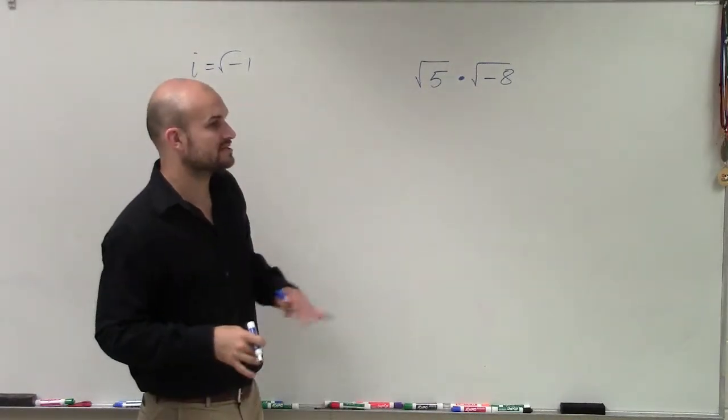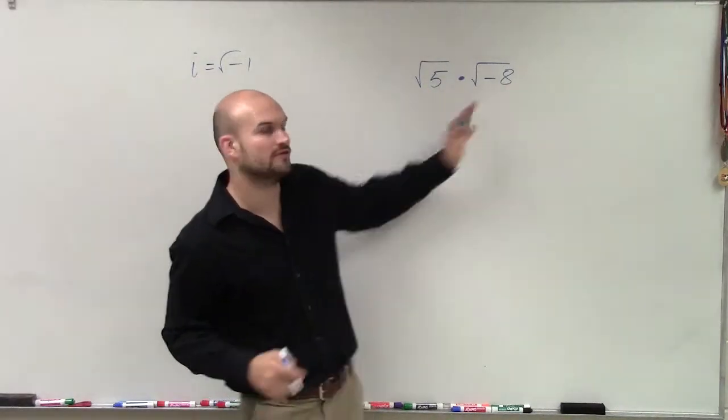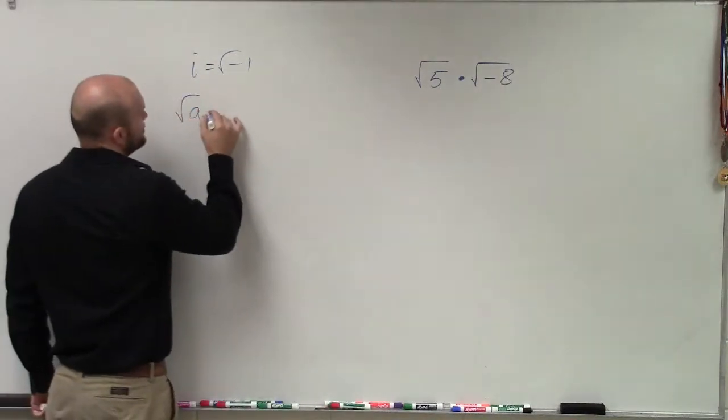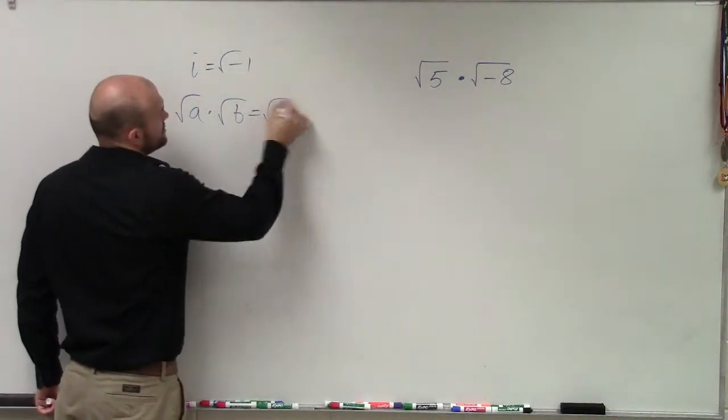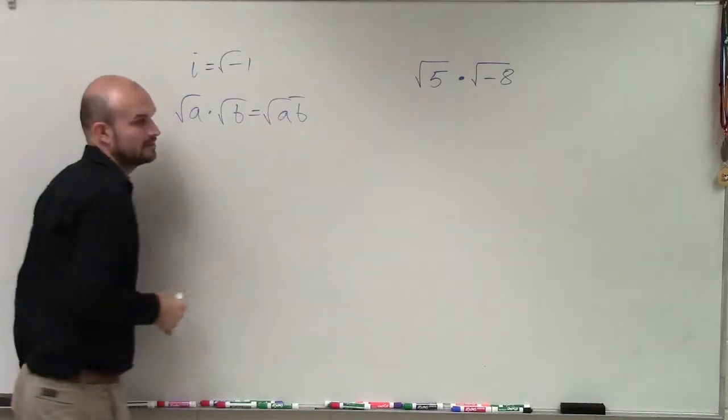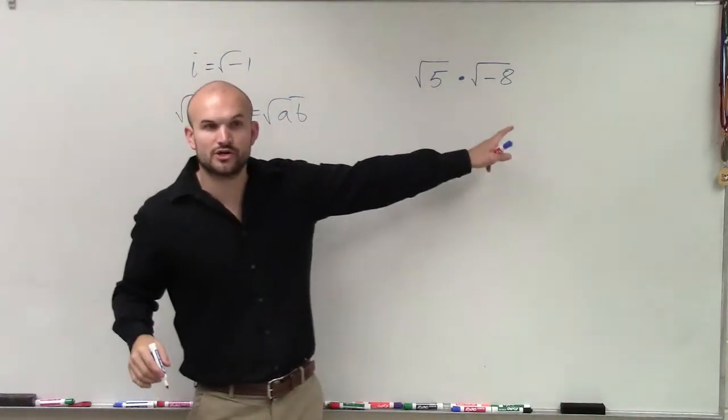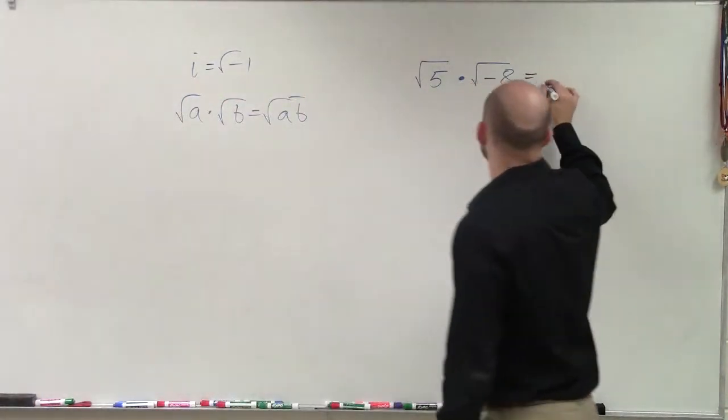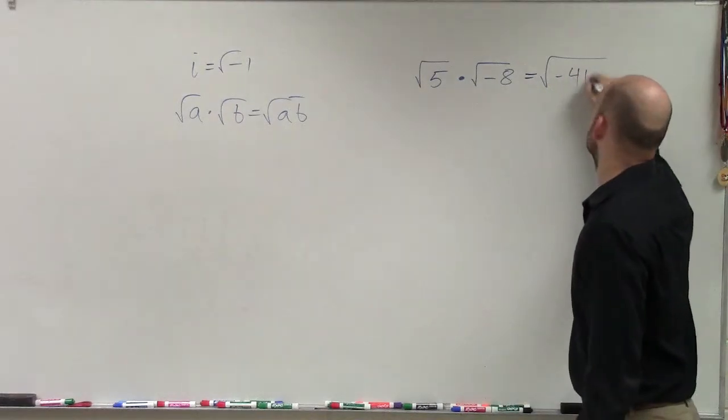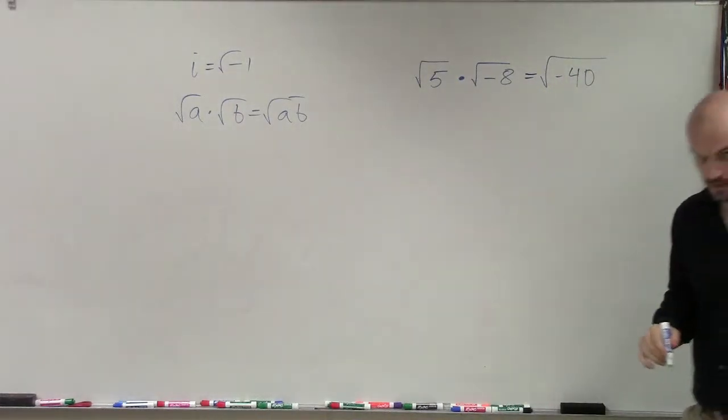So there's a couple different ways I can do this. One way is you guys hopefully understand that when you multiply the radicals, square root of a times square root of b equals square root of a times b. So I can multiply these under the square root. Yes? Okay.